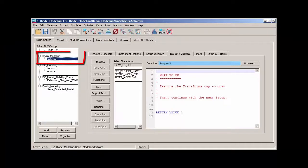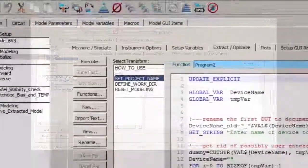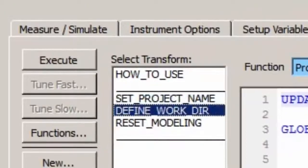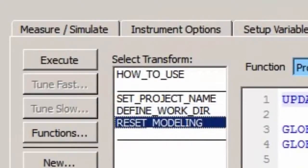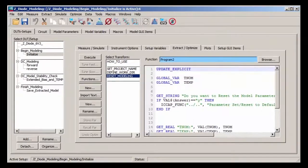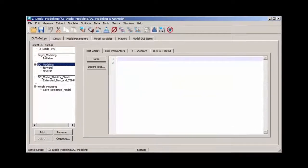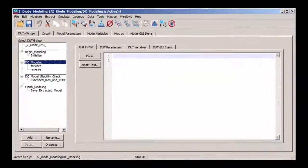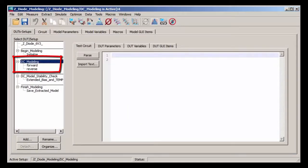In the setup initialized, the transforms set project name, define working directory, and reset modeling are used to configure the project environment and reset the model parameters. We are now ready to start the DC modeling and I can show you the simplified user interface, the main topic of this video.